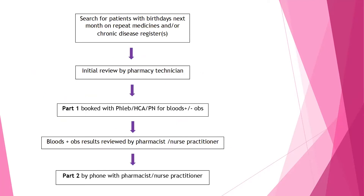This was our proposed scheme: on the 1st of October, for example, the pharmacy technician would run a search for patients whose birthdays are in November who are on repeat medicines or a chronic disease register. Out of 5,000 patients in a month, that takes it down to around 600 — about 150 patients a week. She would go into their notes, review, order whatever bloods are needed, and allocate them to the most appropriate clinician. Those blood results and observations would then come back to us, so we could do that review with all information in hand — rather than reviewing blind and reauthorising medicines, then having to retrospectively act if bloods came back unsatisfactory.